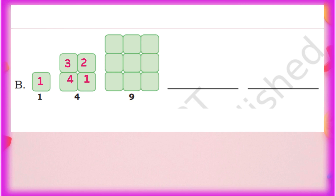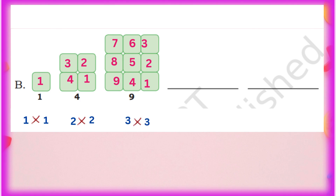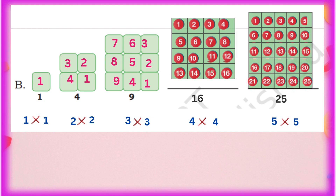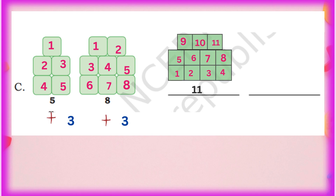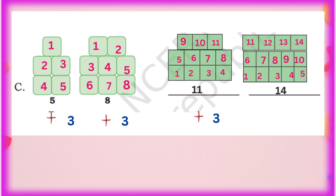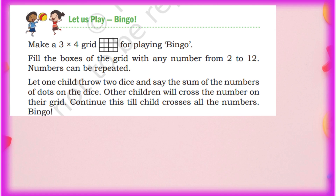Next pattern: 1, 4, 9 boxes. These are square numbers — 1×1, 2×2, 3×3. So next is 4×4 equals 16, then 5×5 equals 25. We draw 16 boxes and then 25 boxes. Next pattern starts at 5, then 8 — a gap of 3 each time: 5, 8, 11, 14. We add 3 each step and draw the corresponding boxes to complete the pattern.